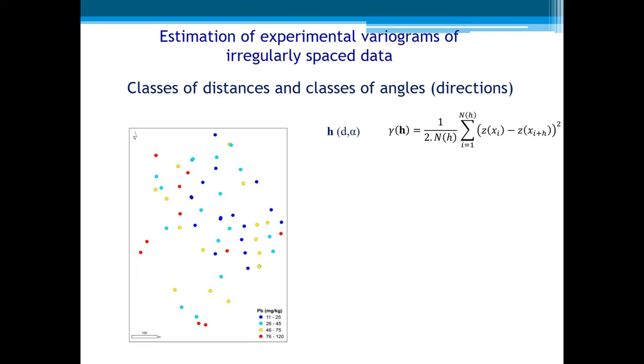Let us simplify with a toy exercise. Let us see all pairs of points covered by the class of angles, for example, 0 degrees plus or minus 10 degrees, and this class of distance, 0 and 50 meters. We can find, for example, these pairs of points here that just are included in those two classes of direction and distances. And based on those points, we can calculate the variogram for this class of directions, class of angles, and this class of distance.